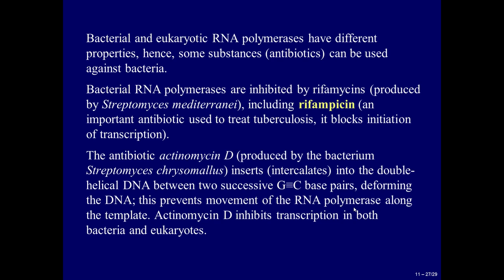Bacterial RNA polymerases are inhibited by rifamycins, produced by Streptomyces mediterranei, including rifampicin, an important antibiotic used to treat tuberculosis. It blocks initiation of transcription. The antibiotic actinomycin D, produced by the bacterium Streptomyces chrysomallus, intercalates into the double helical DNA between two successive G-C base pairs, deforming the DNA. This prevents movement of RNA polymerase along the template. Actinomycin D inhibits transcription in both bacteria and eukaryotes.